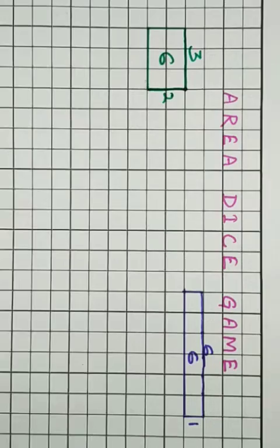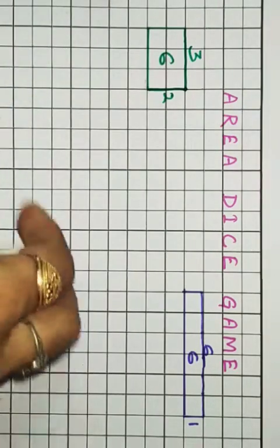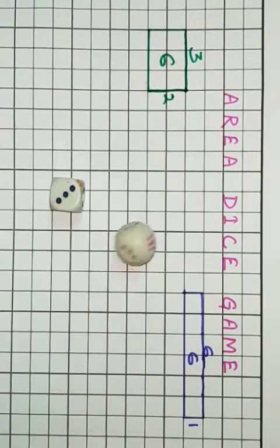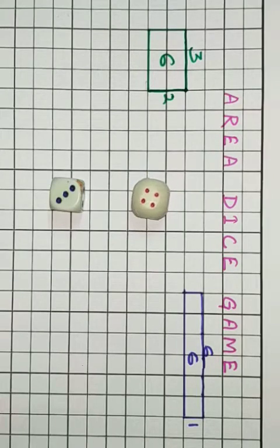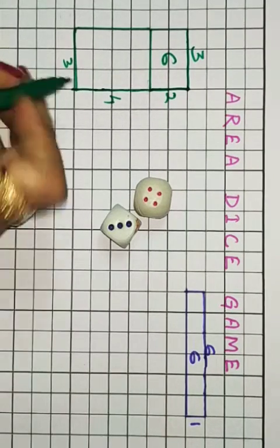Now the second chance will be given to the green child. This is four and three. Here is four and three. Four times three equals twelve.